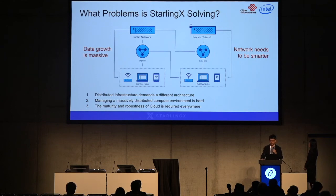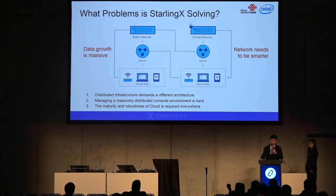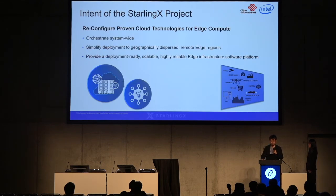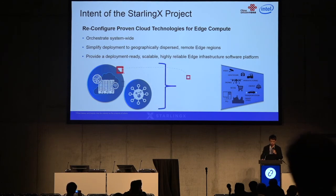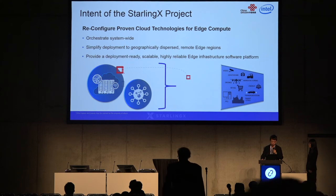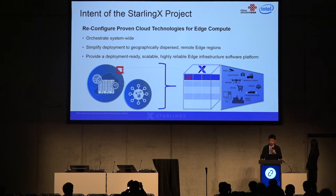What problems is StarlingX solving? As data growth is massive, StarlingX provides enhancements to provide a smarter network. The second thing StarlingX is trying to do is to handle distributed scenarios where the architecture can be different and manageability can be an issue. The third thing is to enhance reliability for your edge side. Think about today — if you need to build up your edge infrastructure, you may need to scope your hardware requirements and evaluate a bunch of open-source software components including OpenStack, with quite a lot of reconfiguration to meet your business requirements. Your business case may be drone surveillance, agriculture, and so on. The intent of StarlingX is to provide a packaged solution.